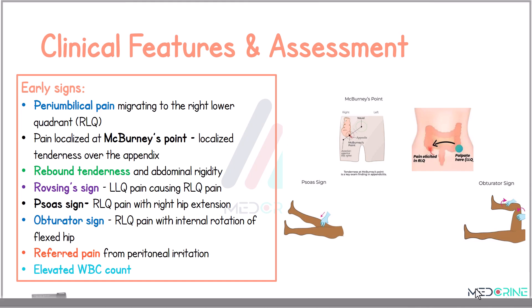Let's explore the clinical features and assessment findings in acute appendicitis. Typically, the pain begins around the periumbilical area and later migrates to the right lower quadrant. This pain then localizes at McBurney's point, which is a specific spot one-third of the way between the anterior superior iliac spine and the umbilicus. There may be rebound tenderness and abdominal rigidity. A positive Rovsing's sign is elicited when pressure on the lower left quadrant results in pain in the right lower quadrant.